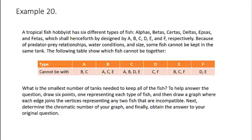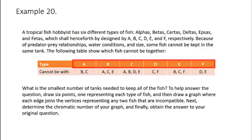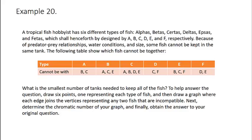So what is the smallest number of tanks needed to keep all of the fish? To help answer the question, you want to draw six points, one representing each type of fish, so A through F, and then draw a graph where each edge joins the vertices representing any two fish that are incompatible. For example, because fish A cannot be with fish B or C, you'll want an edge connecting vertex A to vertex B and an edge connecting vertex A to vertex C. Once you have your graph, determine the chromatic number and finally obtain the answer to the original question. What is the smallest number of tanks needed to keep all of the fish? I encourage you to pause the video and practice this example on your own before I reveal the answer.